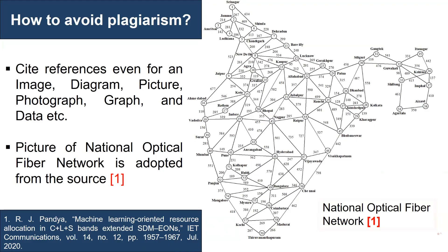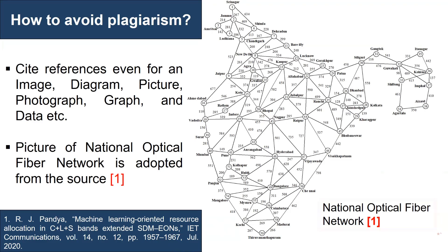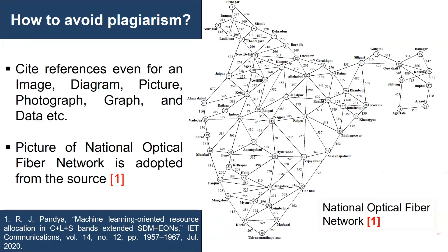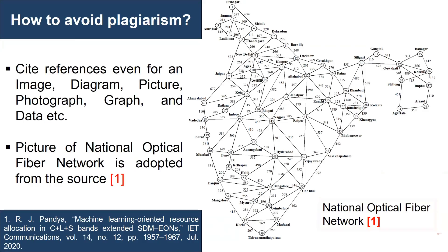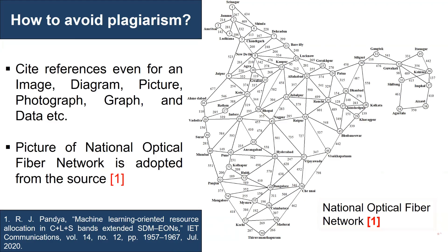Moreover, citing any copyrighted material such as images and pictures is not sufficient if they are not published under Creative Commons licenses. One has to acquire written approval from the respective publisher before redistribution. This will help to avoid copyright infringements.